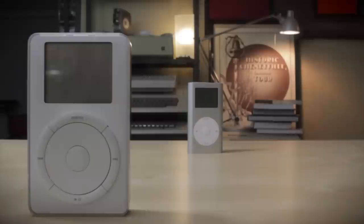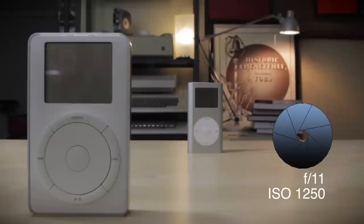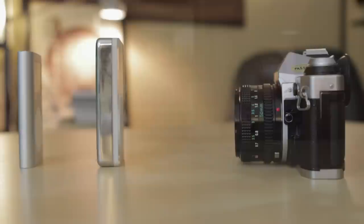Now, if I stop down the aperture or bring that f number up higher, you'll see that the back iPod is in focus. But because it's letting in less light, I had to compensate by increasing my ISO. Let's take a look at that concept a little more in depth so you guys can really understand it.